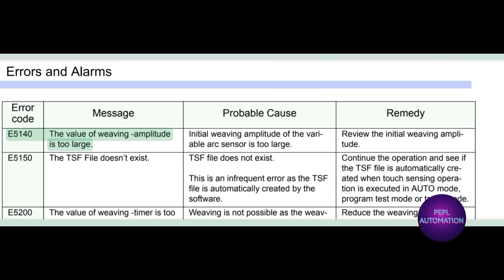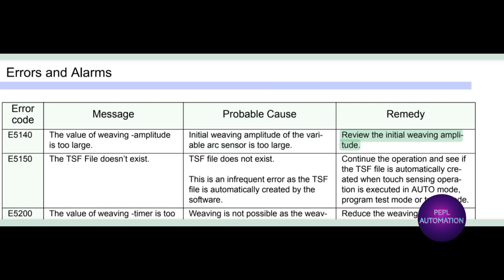E5140: the value of weaving amplitude is too large. Initial weaving amplitude of the variable arc sensor is too large. Review the initial weaving amplitude.